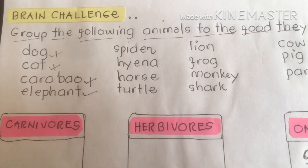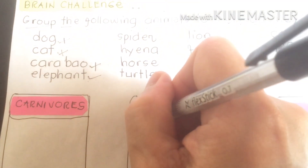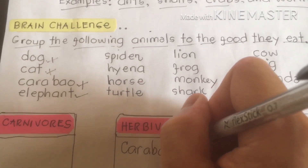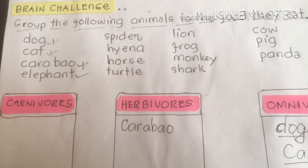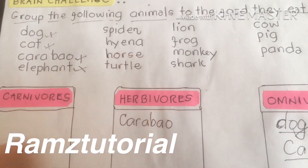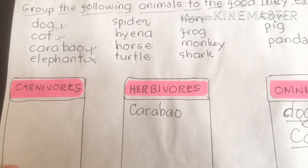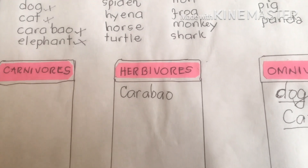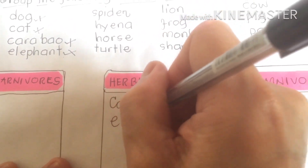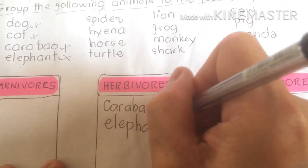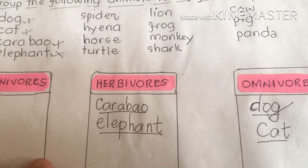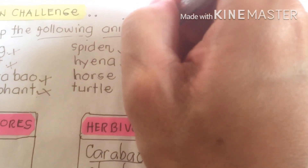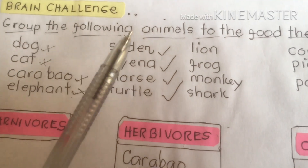Caribou belongs to herbivores, because caribou are plant eaters and their teeth are flat. Elephant is the largest animal — where do they belong? Elephant belongs to herbivores as well. So caribou and elephant both belong to herbivores.